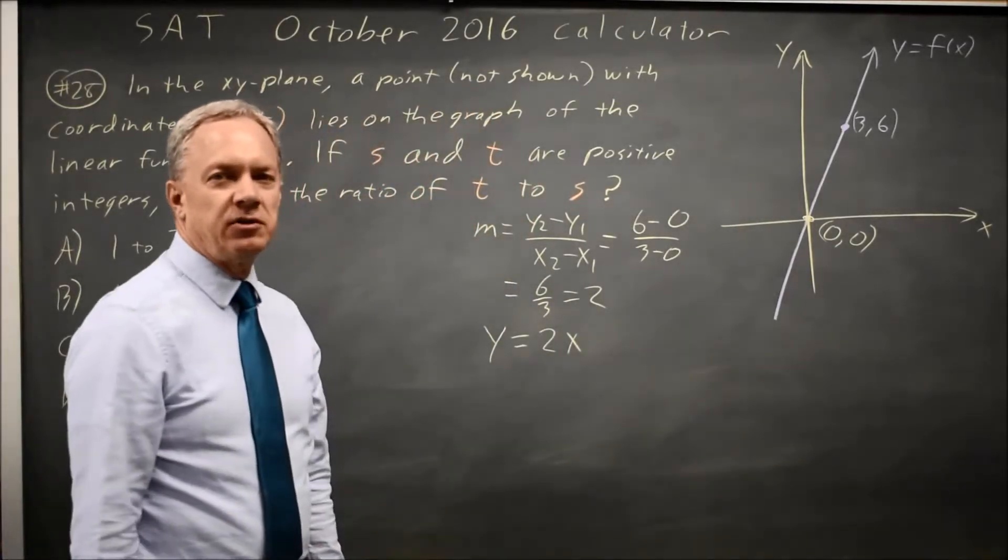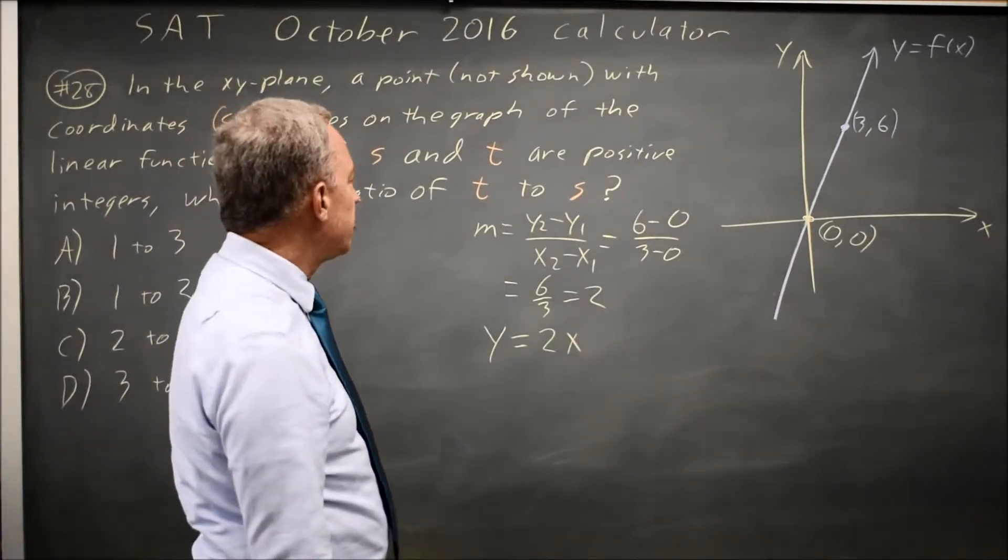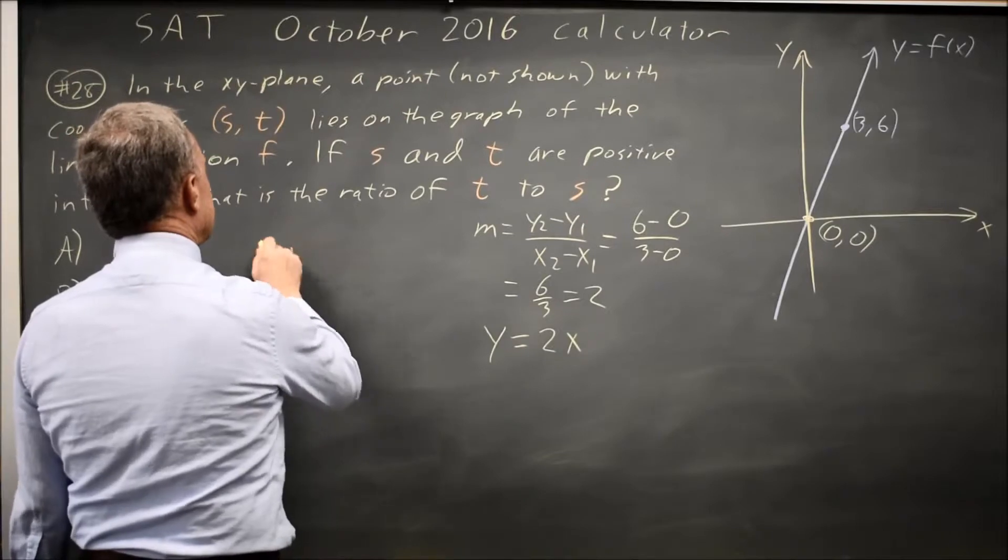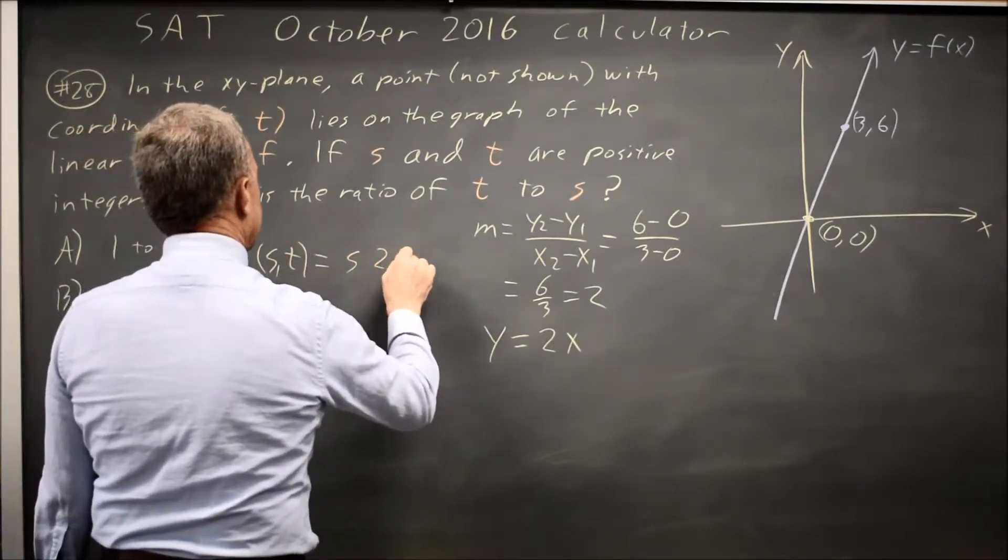So whatever the x value is, the y value is twice as big. So the point (s, t) equals (s, 2s).